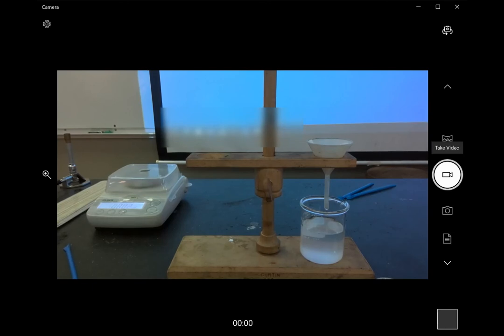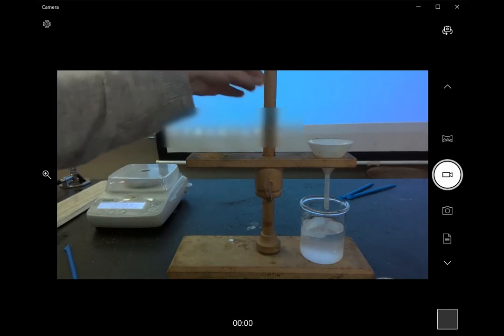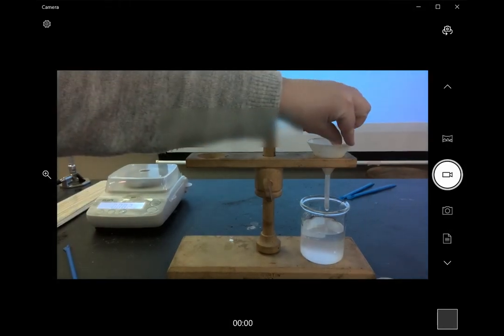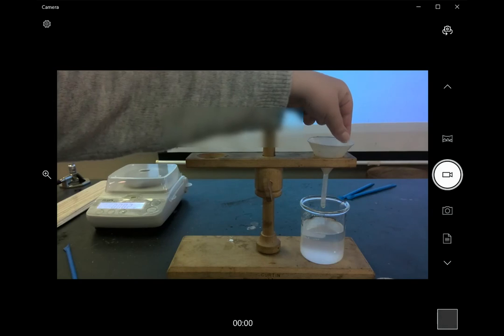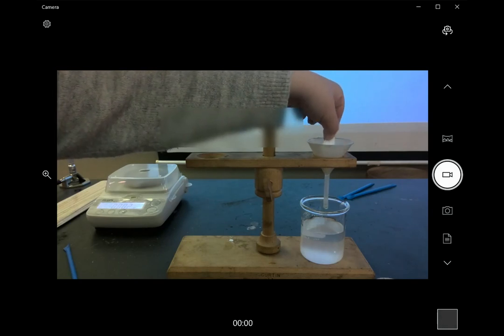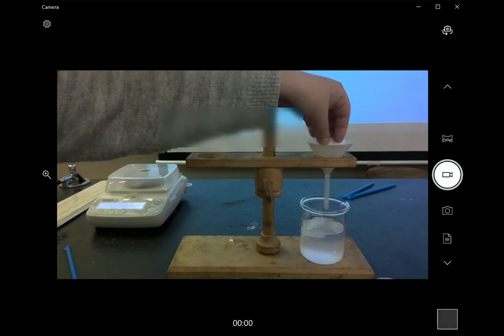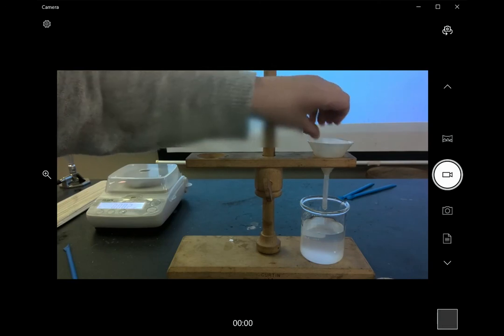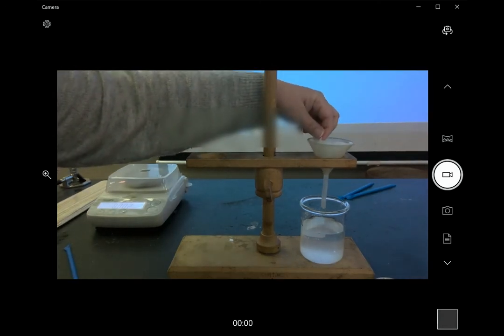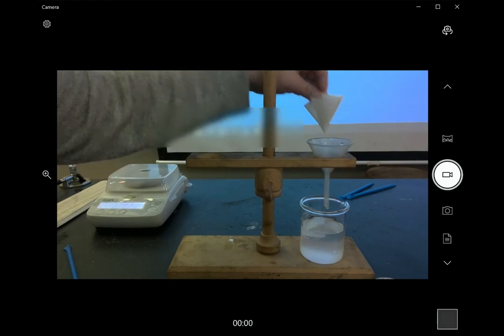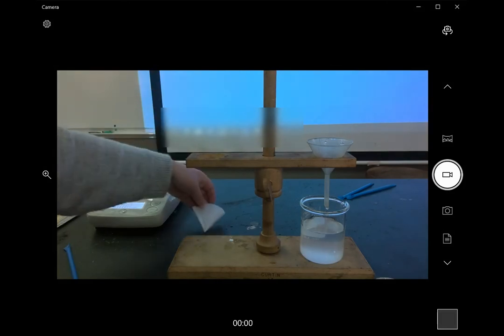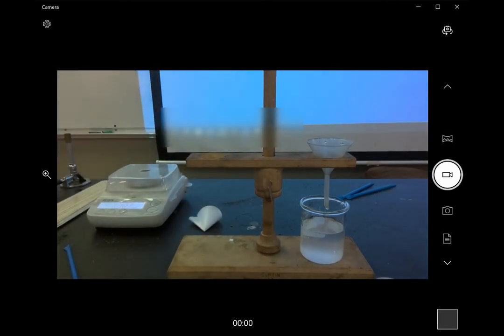And then once the water has filtered through and we don't have any more drips, we can just pull the filter paper out of the funnel and leave it to dry. We'll come back tomorrow and mass it once it's dry to see what our actual yield was and compare that to our theoretical yield.